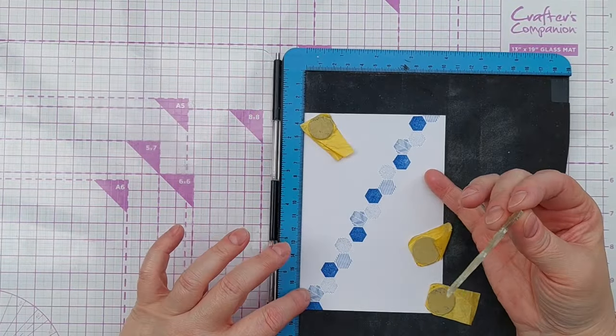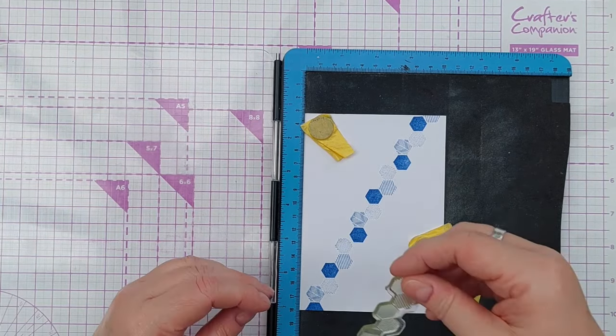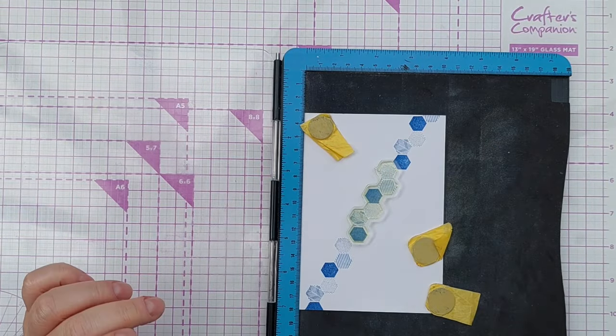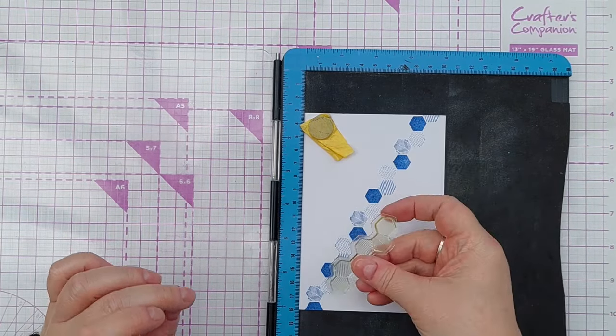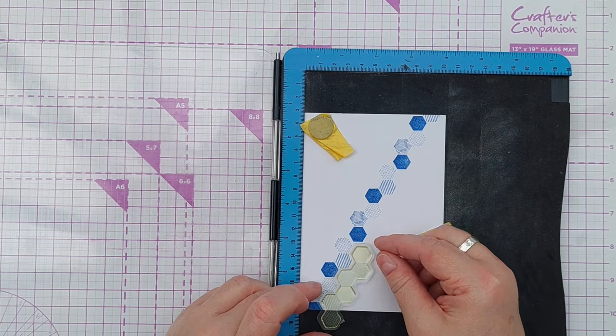Now we've got a complete row of hexagons. I'm going to draw a row either side using the paradise teal but instead of having the stamp that way around I'm just going to flip it so the patterns are spread out a bit.